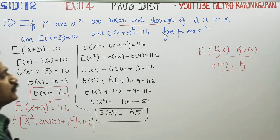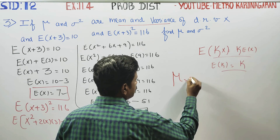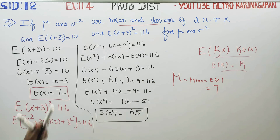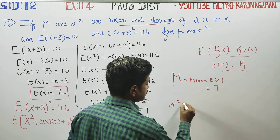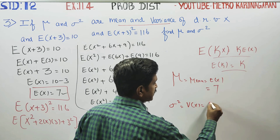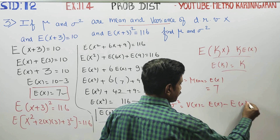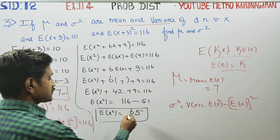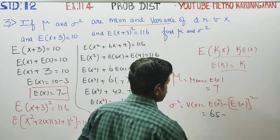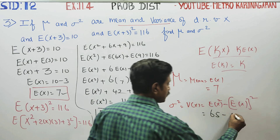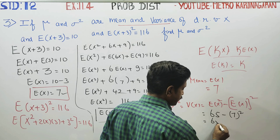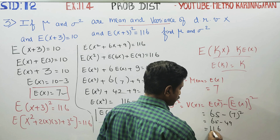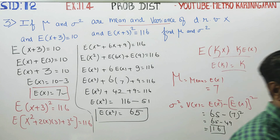The mean μ = E(X) = 7. Now for the variance: variance σ² = E(X²) − [E(X)]². We have E(X²) = 65 and E(X) = 7, so σ² = 65 − 7² = 65 − 49 = 16. Therefore the variance is 16.